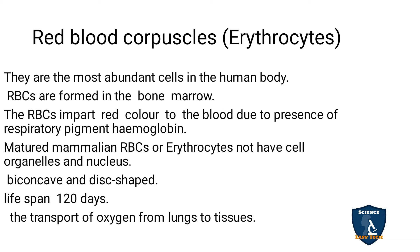Red blood corpuscles or erythrocytes are the most abundant cells in the human body. RBC is formed from the bone marrow. The RBC is red in color because of the respiratory pigment hemoglobin. Hemoglobin enables RBC to transport gases. Due to the presence of hemoglobin, the RBC is red in color. Mature mammalian RBC does not have any cell organelles and nucleus.